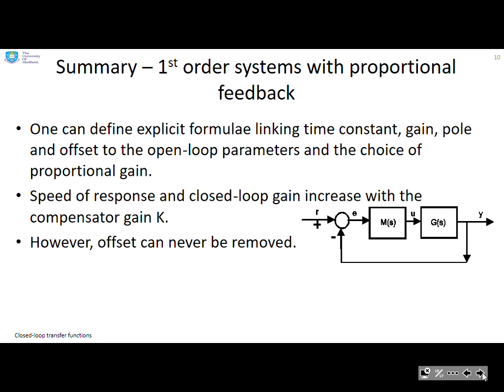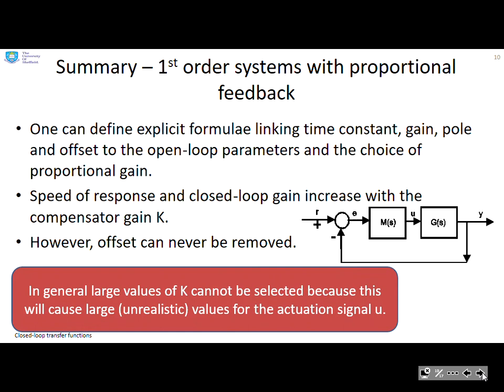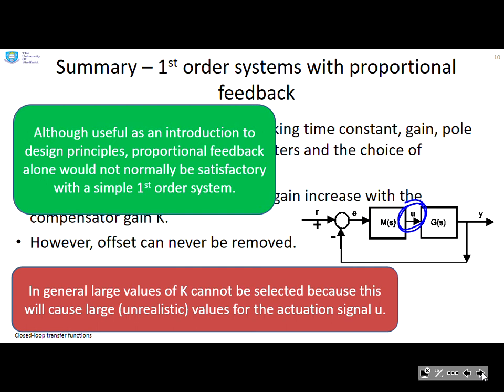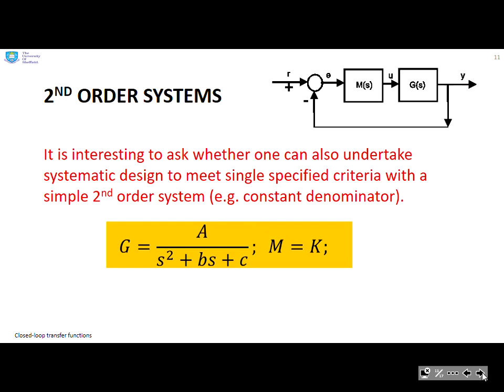A summary for first-order systems with proportional feedback: You can define explicit formulas linking time constant, gain, pole, and offset to the open-loop parameters and the choice of proportional gain. The speed of response and closed-loop gain increase with compensator gain K, but offset can never be removed. In general, large values of K cannot be selected because this would cause unrealistic values for the actuation signal. In practice, K is limited because actuation is limited. Although this is useful as an introduction to design, in general, proportional feedback alone is not satisfactory.